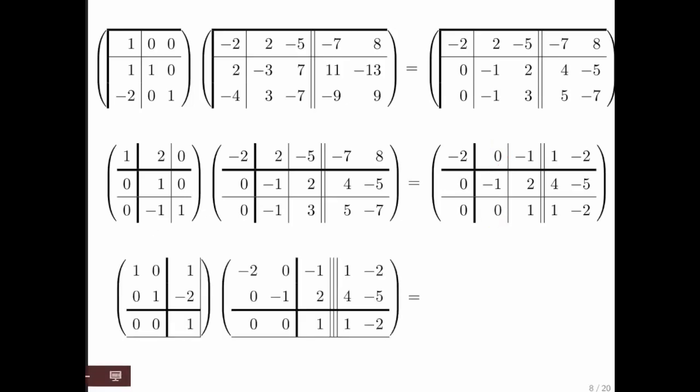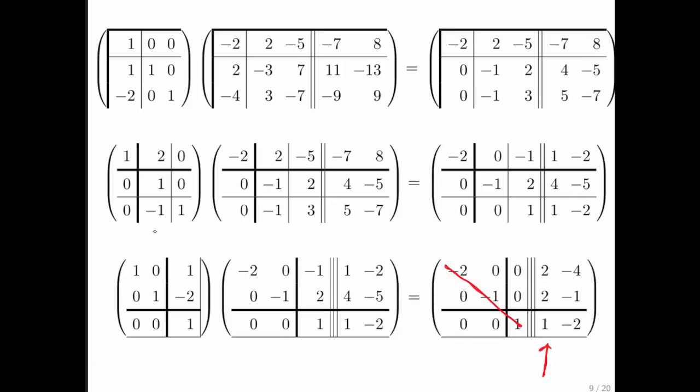Then we move on. We compute one more Gauss-Transform. We apply it. And we end up with a diagonal matrix and multiple right-hand sides that have been updated. And you can imagine that we could have even more right-hand sides.